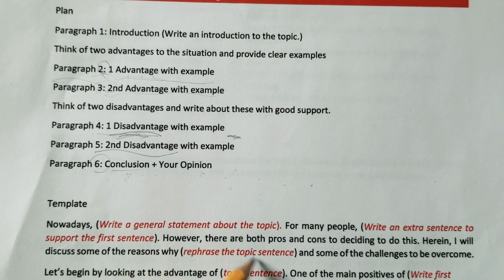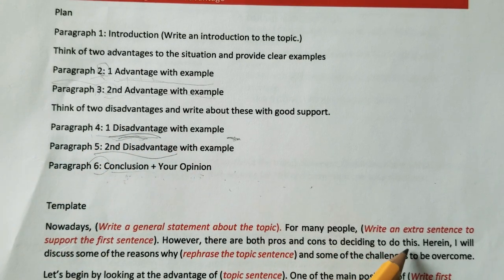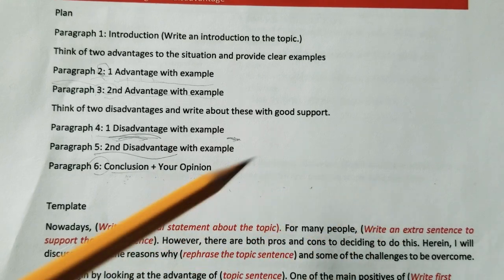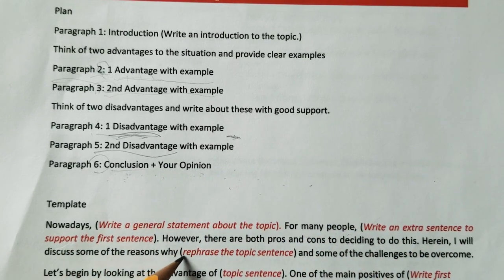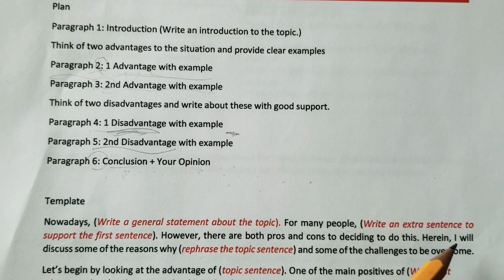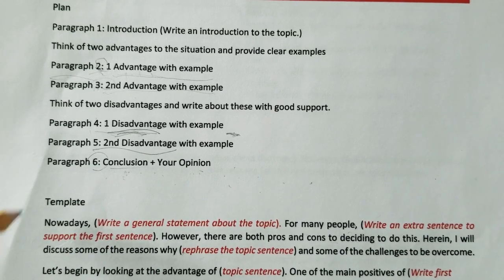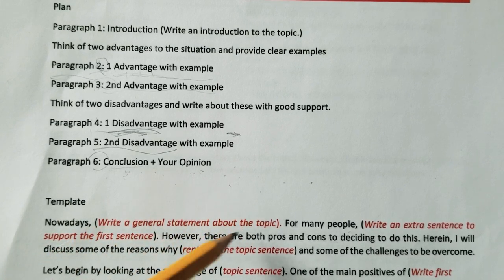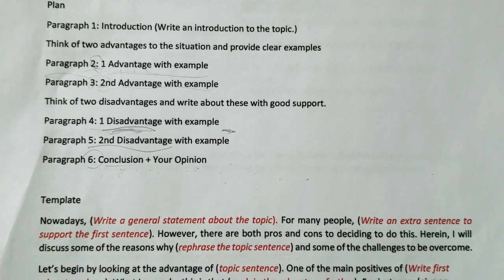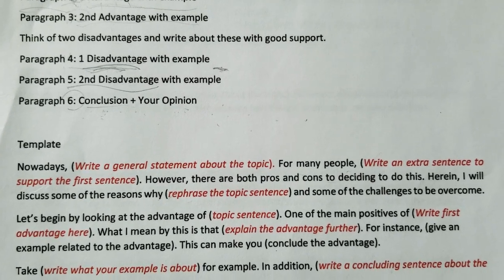Then you write: 'However, there are both pros and cons of deciding to do this. Herein, I'll discuss some of the reasons why tourism is beneficial and some of the challenges to be overcome.' This covers the third sentence of your introduction. You're now done with the three-sentence introduction. The sentences highlighted in red are the ones you replace with your own words — just make sure the grammar is correct.